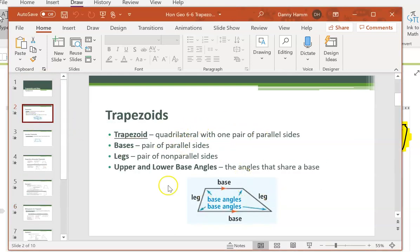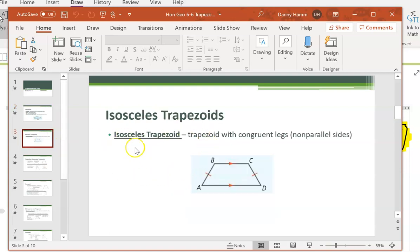So it is a quadrilateral, and then we have base one and base two, and then we have legs on the side, and these are considered base angles here. We also have an isosceles trapezoid, very similar to an isosceles triangle. We have two sides that are congruent, but in this case, it makes the bases parallel to each other, and when this happens, we have certain properties.